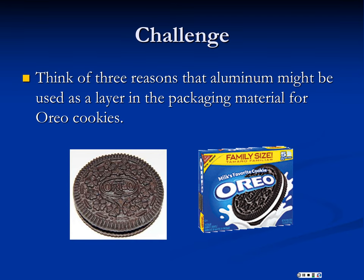One way to begin thinking about this is to consider Oreo cookies, that most perfect of factory-made cookies. The packaging has several layers, and one of those layers is aluminum. Pause the recording for a moment and see if you can think of at least three reasons we might use aluminum as a layer in the packaging for Oreo cookies.